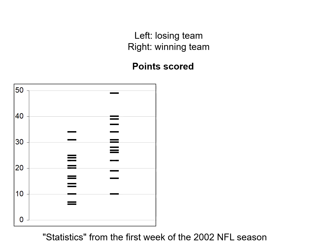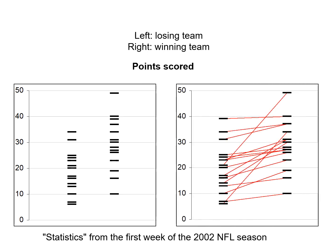We can add more information: each loser is paired up with a particular winner, so we can draw a line between each pair and see what's going on. When we do that, we see a pattern where all the slopes are positive — in every single case the loser had fewer points than the winner. So points seems to be a pretty good factor for determining who wins.